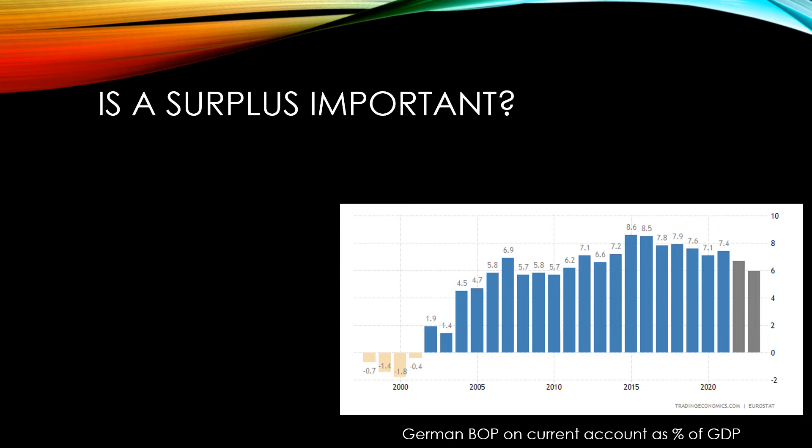If it is due to increased demand for domestic goods, this can have a very positive effect on the economy. This is because firms need additional workers to produce the additional goods. This means people have higher overall incomes and demand for other goods within the economy also increases.